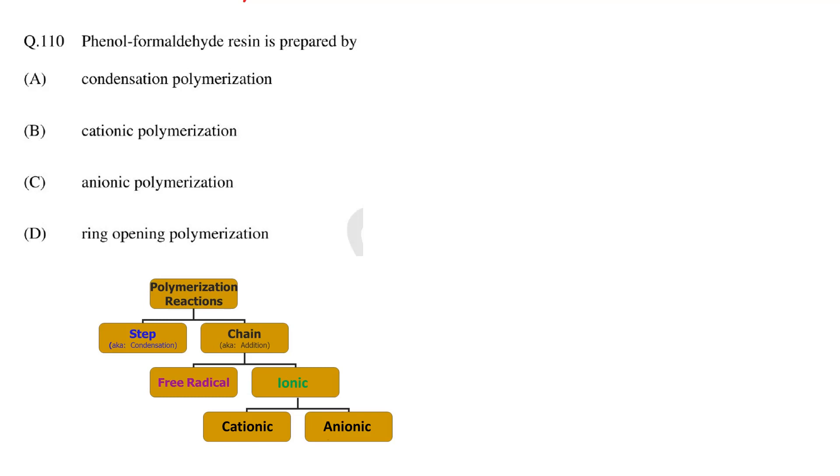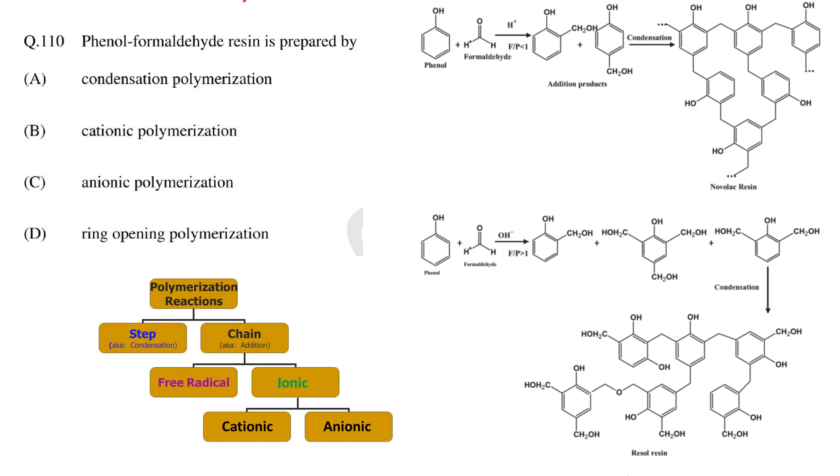Whereas the typical requirement for condensation polymerization is that either the monomer or the repeat unit should contain different functional groups which can participate in the reaction to form the polymer and at the same time also eliminate a small molecule. As phenol formaldehyde is prepared by the reaction of phenol or substituted phenol with formaldehyde and a water molecule is eliminated during the reaction, this polymerization reaction can be categorized as condensation polymerization. So the correct answer is A, condensation polymerization.